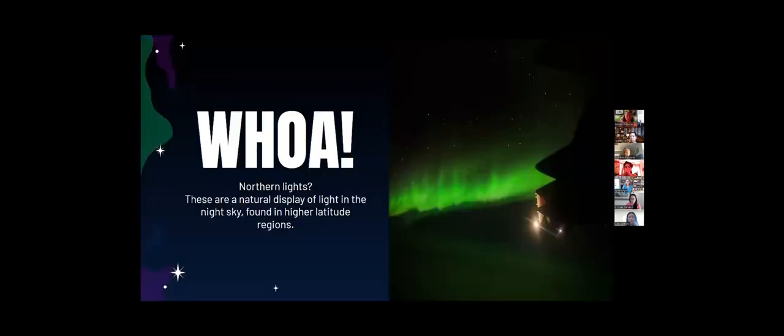Well, what even are the Northern Lights? These are a natural display of light in the night sky found in higher latitude regions. They're swirling rivers of dancing lights when solar winds or sun particles interact with the magnetic field, and you'll learn a little bit more of what exactly they are in this project.